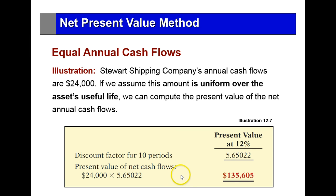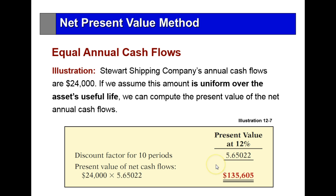Stewart Shipping Company's annual cash flows are $24,000. Assuming this amount is uniform over the asset's useful life, we can compute the present value of the net annual cash flows. The discount factor for 10 years at 12% — we take the $24,000 times the present value factor over 10 periods. The present value of that money today is $135,000.